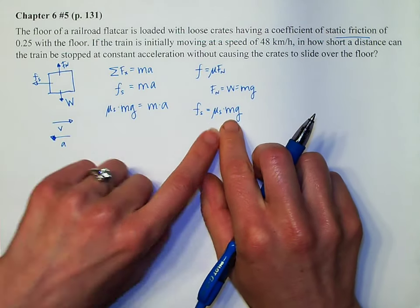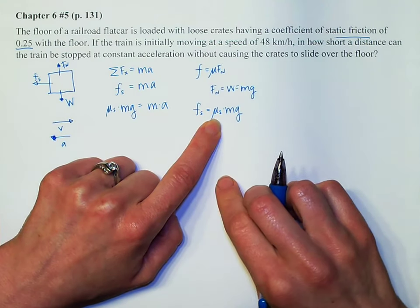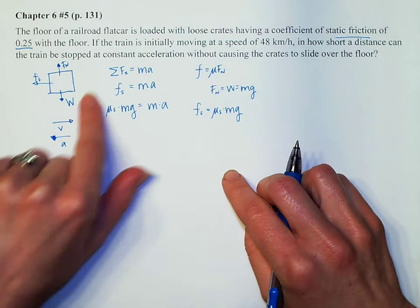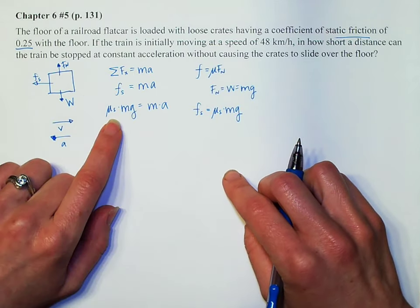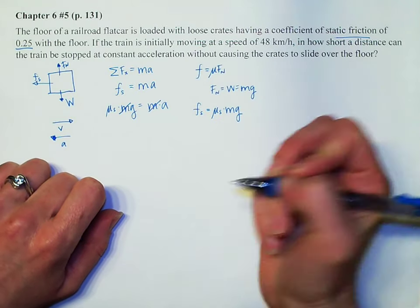And by the way, the reason why I would think to do this in the first place is because we know what the coefficient of static friction is. So pretty clear that we're going to have to use that somewhere. And this is where it makes the most sense to me. And so now we see that our mass cancels out. Hooray for us.